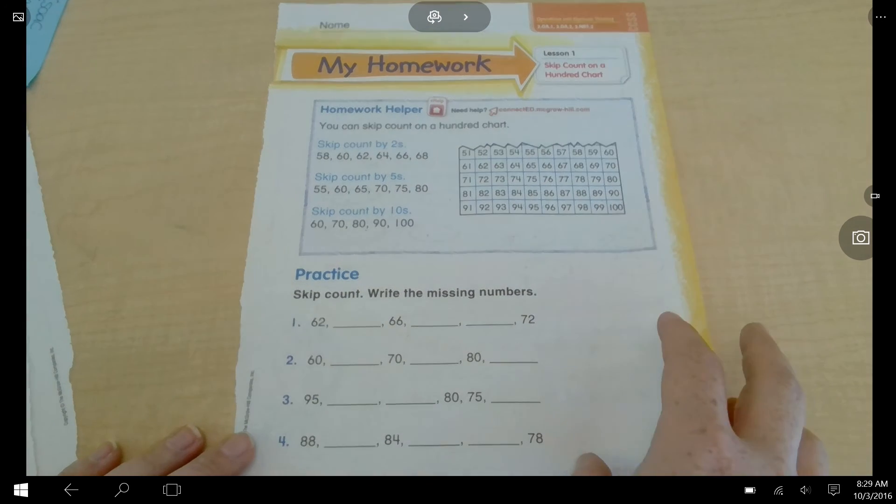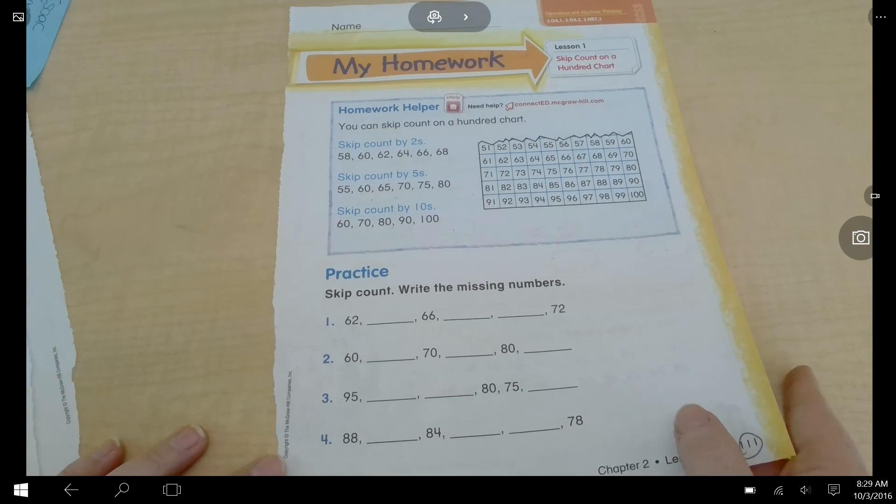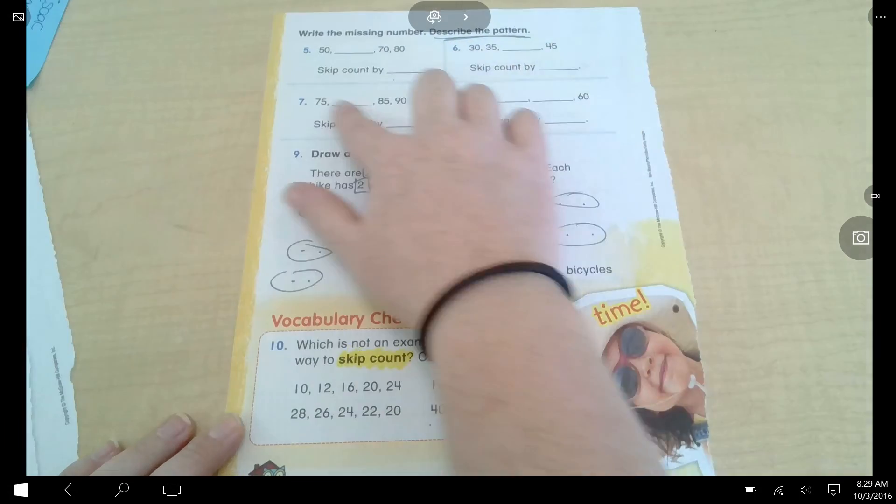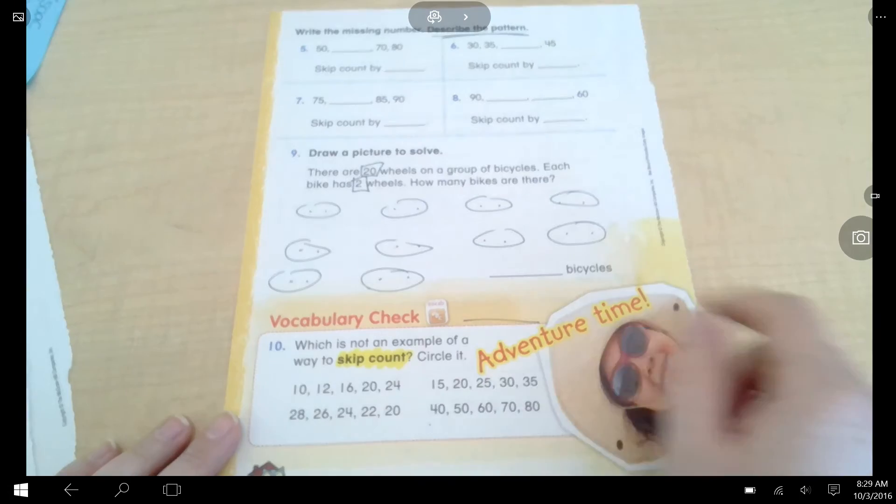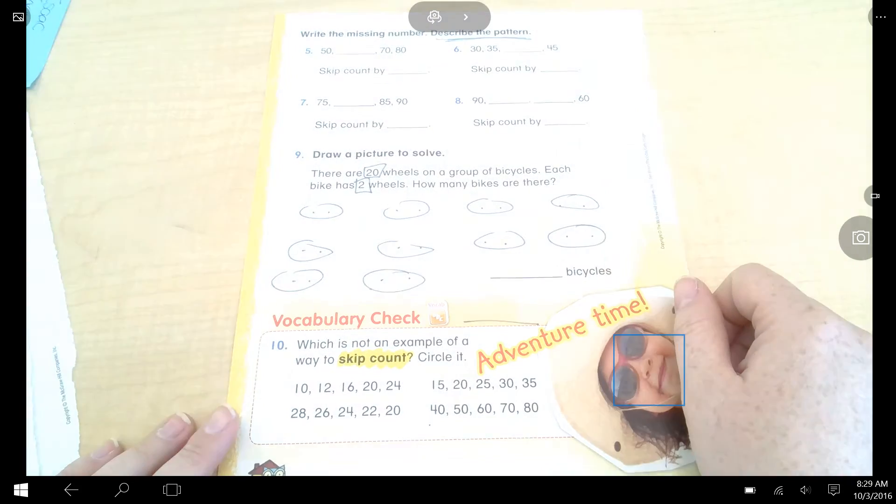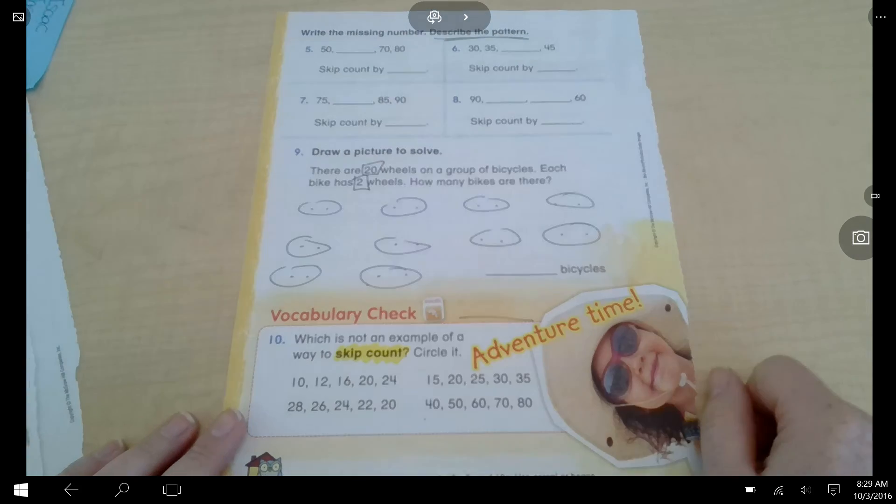The last page is your homework page. You can do the front all on your own. You're not describing the pattern. But you do, on the back part, describe the pattern and fill in the missing numbers. And then the last problem are this. There are 20 wheels on a group of bicycles. Each bike has two wheels. How many bikes are there? I drew a picture to help me.